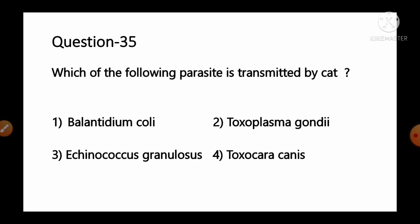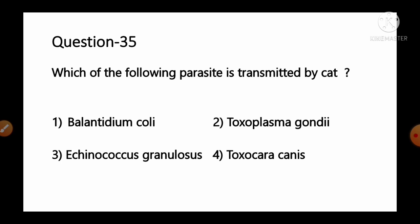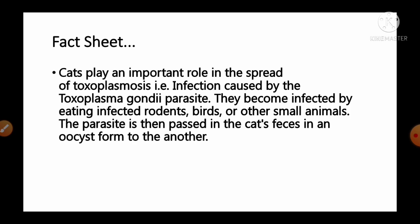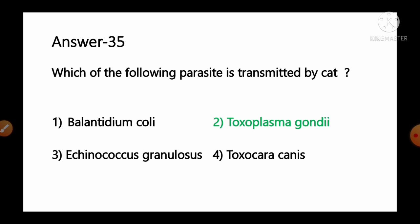Question number 35: Which of the following parasites is transmitted by the cat? Options: 1) Balantidium coli, 2) Toxoplasma gondii, 3) Echinococcus granulosus, 4) Toxocara canis. Cats play an important role in the spread of toxoplasmosis — infection caused by Toxoplasma gondii. Cats become infected by eating infected rodents or birds, and the parasite is passed in the cat's faeces as oocysts. So option number 2, Toxoplasma gondii, is the correct answer.